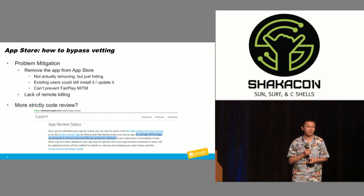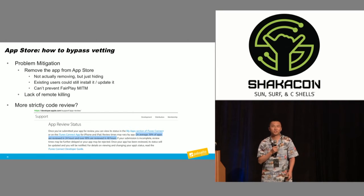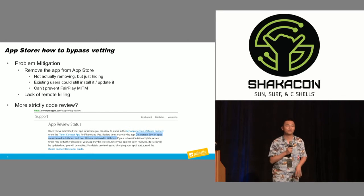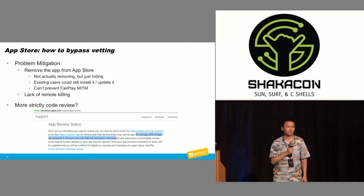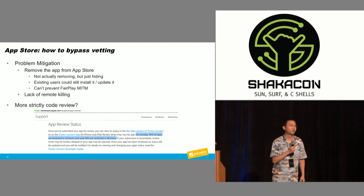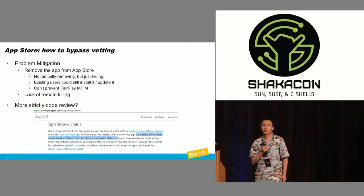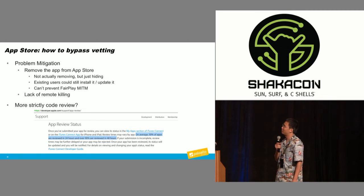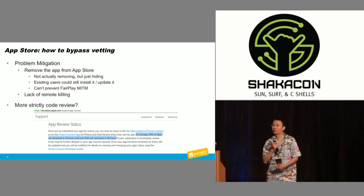The mitigation is that Apple can remove malware from the App Store. But there is no remote cleaning — meaning if you're already infected, Apple cannot remotely uninstall the app. Theoretically they could adopt stricter code review, but the most recent change is that about a month ago, Apple announced all app review times will be reduced from a week to one day, and I can't imagine how they could improve code review in that way.